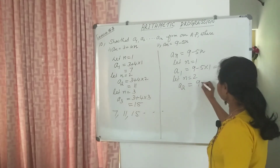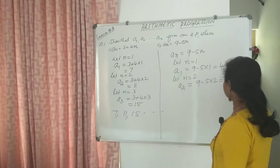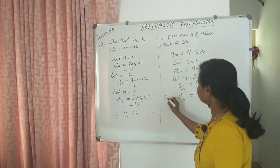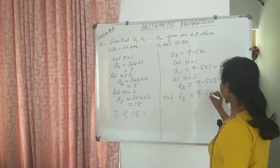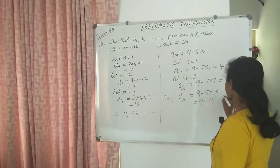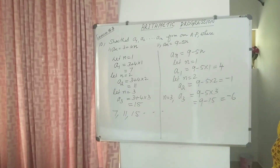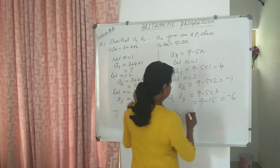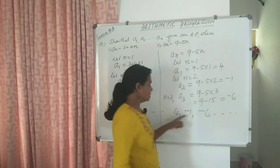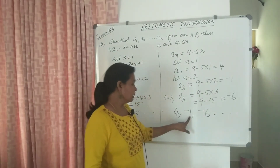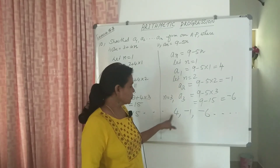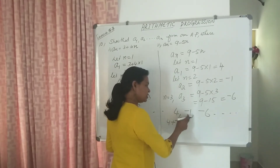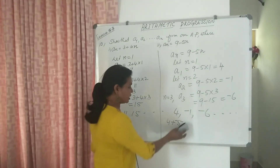We get A2 — second term: 9 minus 5 into 2: 10 minus 1. Then A3: N equal to 3, A3 equal to 9 minus 5 into 3. That is 9 minus 15, that is negative 6. So the AP is: first term is 4, second term is negative 1, third term is negative 6. The common difference: negative 1 minus 4 equals minus 5. So 4 plus minus 5 gives negative 1, negative 1 plus minus 5 gives negative 6. There is a common difference, so this forms an AP.